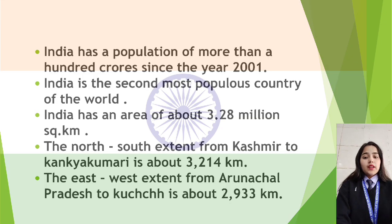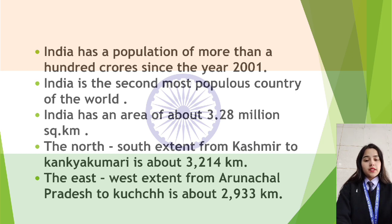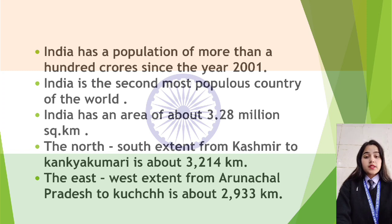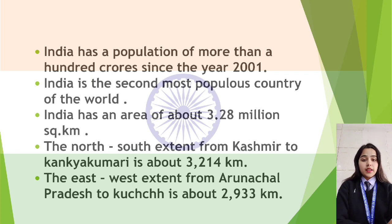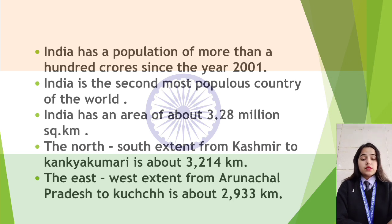Now let us get some more information about India. First, India has a population of more than 100 crores since the year 2001. Second, India is the second most populous country in the world. Third, India has an area of about 3.28 million square kilometers. Fourth, the north to south extent from Kashmir to Kanyakumari is about 3,214 kilometers.